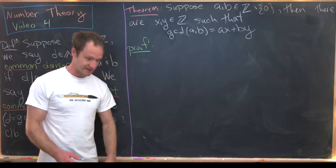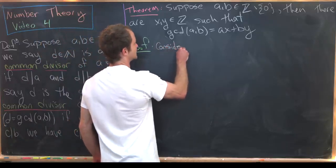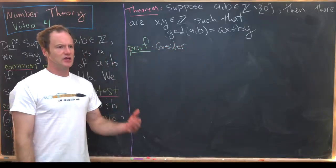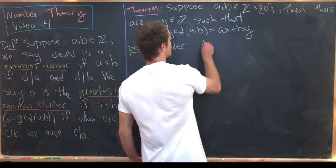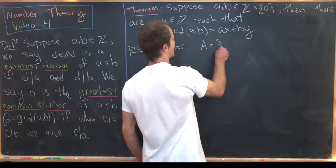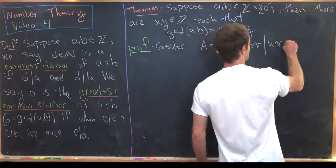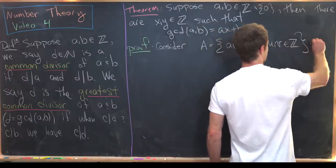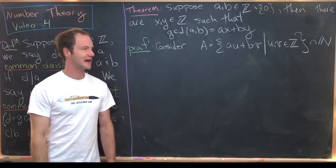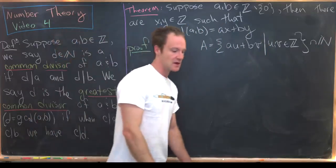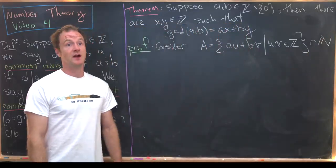This proof uses a similar technique to what we saw with the division algorithm. We're going to consider some sort of set and then use properties of the natural numbers in order to get something out of that set. We'll take this set, which I'll call A, to be all values au plus bv as u and v range over all integers, intersected with the natural numbers. I'm taking the natural numbers not to include zero.